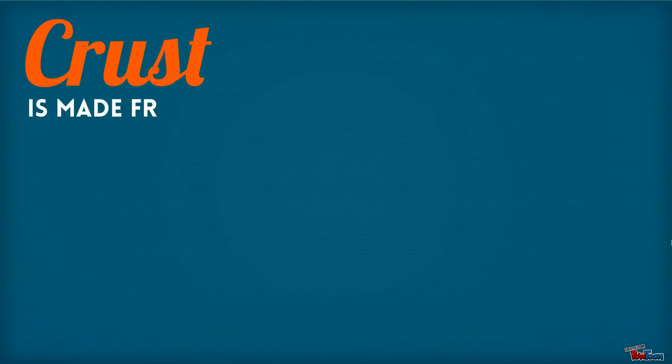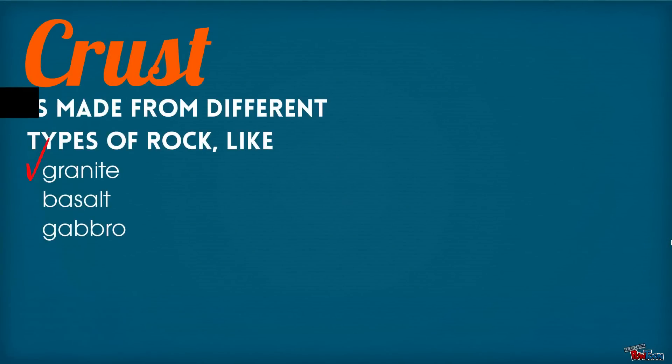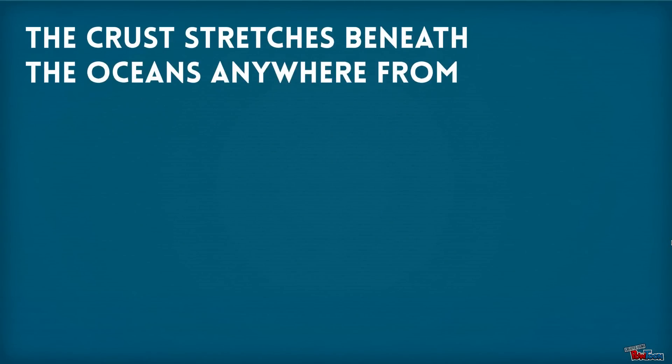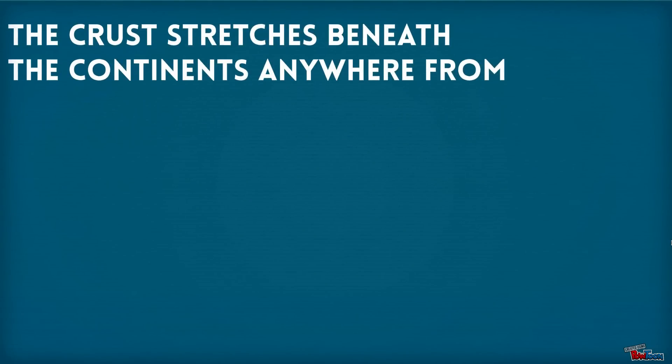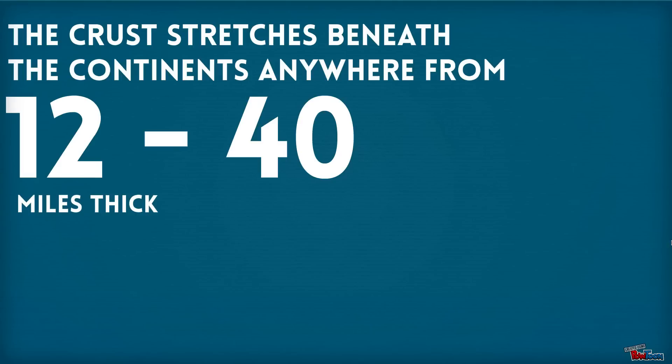The crust is made from different types of rock like granite, basalt, and gabbro. The crust stretches beneath the oceans anywhere from 3 to 6.8 miles thick. The crust stretches beneath the continents anywhere from 12 to 40 miles thick.